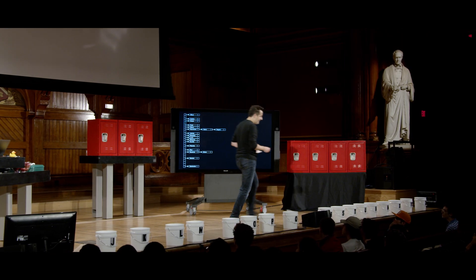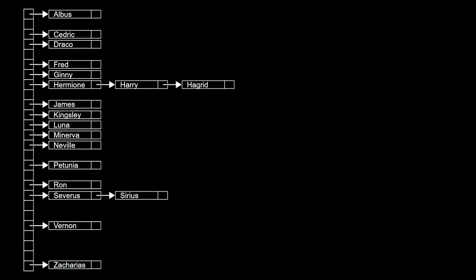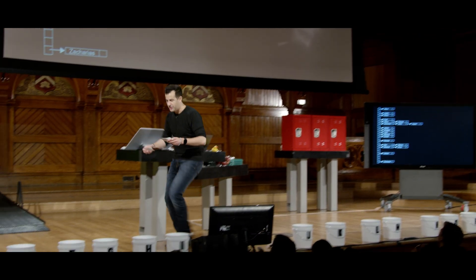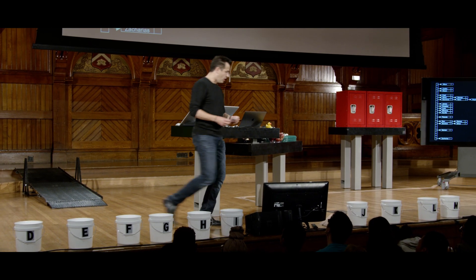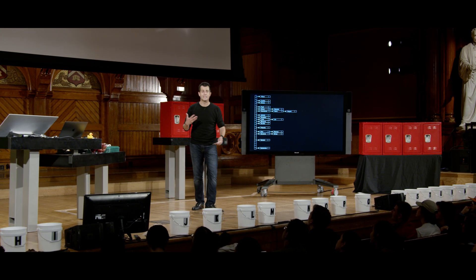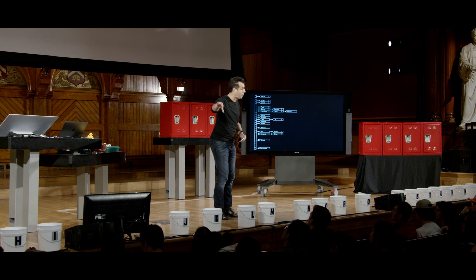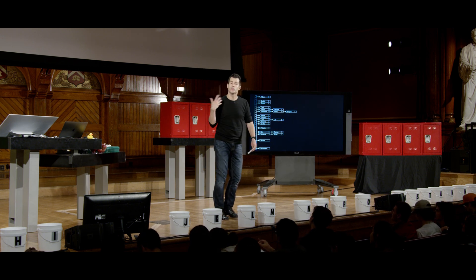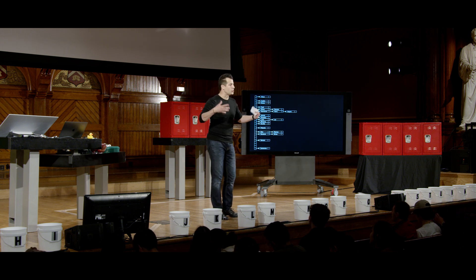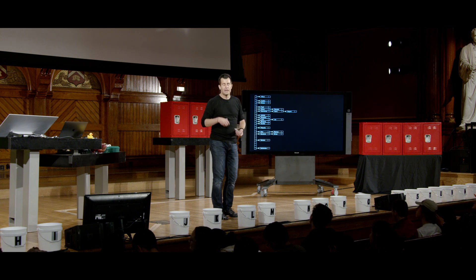Sirius goes into bucket 18, but Severus is already there — awkward. Remus is bucket 17, so Remus links together with Ron there. George goes into bucket 6. Lily collides with Luna — and this is a collision in computer science. Any time you have a value you're trying to put somewhere but there's already something there, you need to resolve the collision. Here we just link them together, or as we say, we bucketize values.